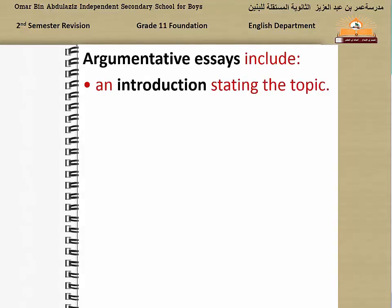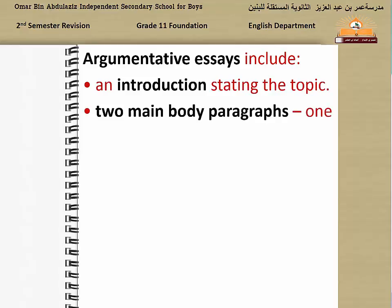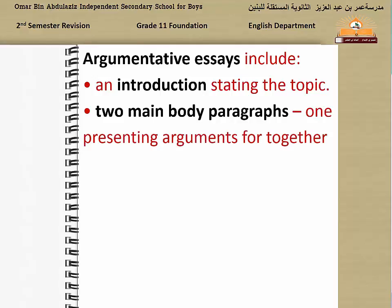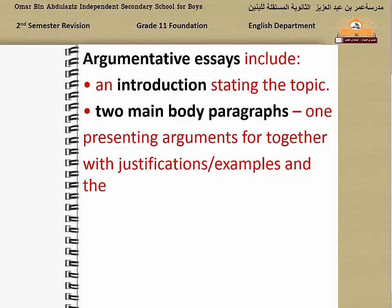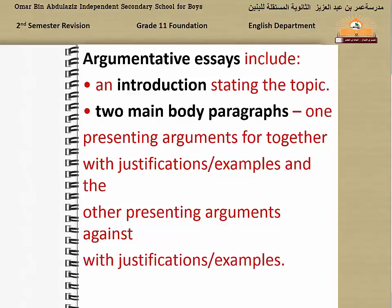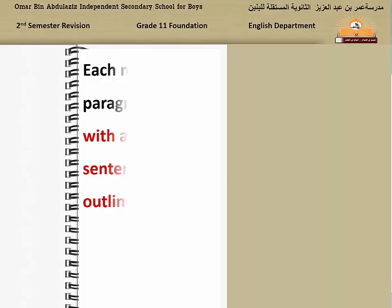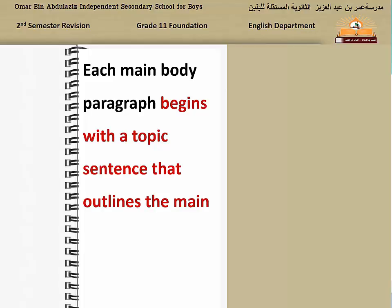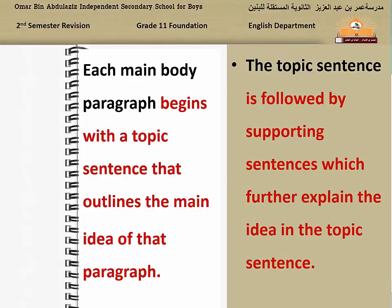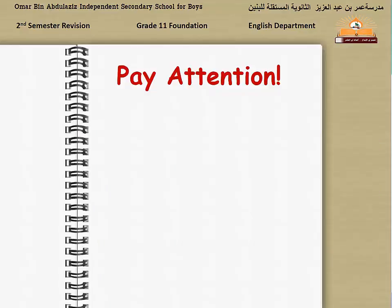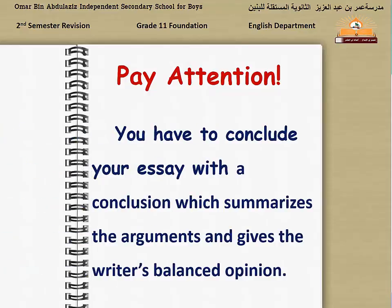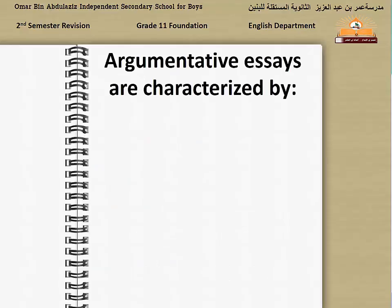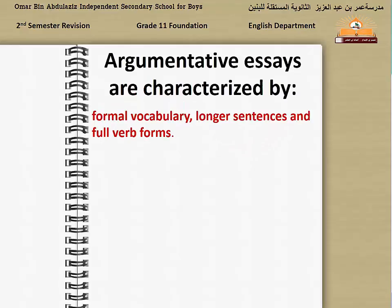Argumentative essays include an introduction which states the topic, and two main body paragraphs — one presenting arguments for, together with justifications and examples, and the other presenting arguments against, with justifications and examples. Each main body paragraph begins with a topic sentence that outlines the main idea of that paragraph. The topic sentence is followed by supporting sentences which further explain the idea. You have to conclude your essay with a conclusion which summarizes the arguments and gives the writer's balanced opinion. Argumentative essays are characterized by formal vocabulary, longer sentences, and full verb forms.